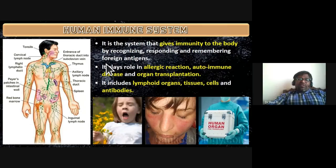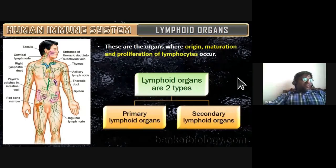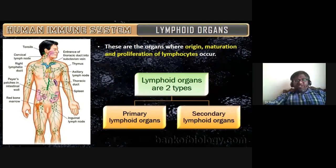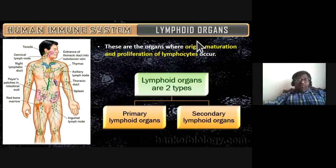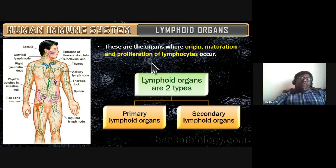Lymphoid organs are the organs where the origin, maturation, and proliferation of lymphocytes occur — you can remember this as OMP. Lymphoid organs are of two types: primary lymphoid organs and secondary lymphoid organs.